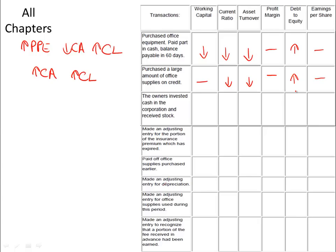The owners invest cash in the corporation and receive stock, which means the corporation's current assets — cash — are going up, and their shareholders' equity, or contributed capital, is increasing. If contributed capital goes up, then the number of shares also increases, so we want to keep that into account when we get to earnings per share.